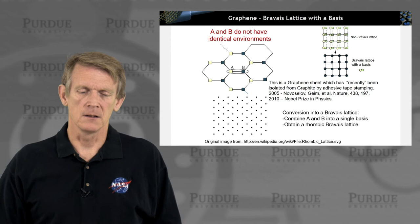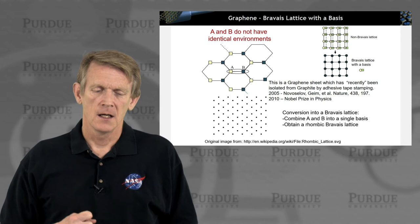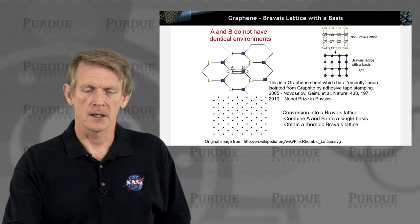But you can combine A and B into a single basis and then convert that basis into a rhombic Bravais lattice. And then on that lattice, every element, every basis in that lattice sees the same chemical environment.